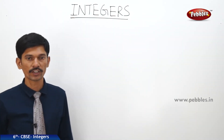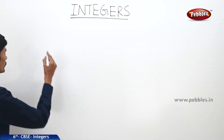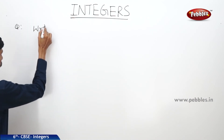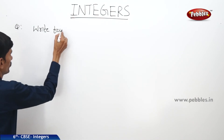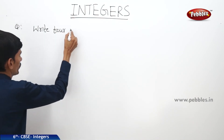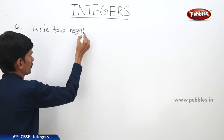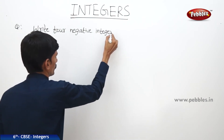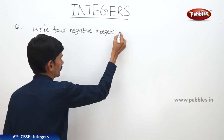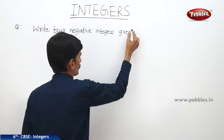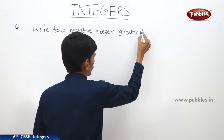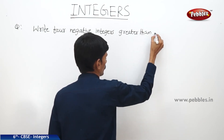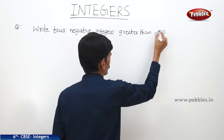Now let us see the next question: write 4 negative integers greater than minus 20.